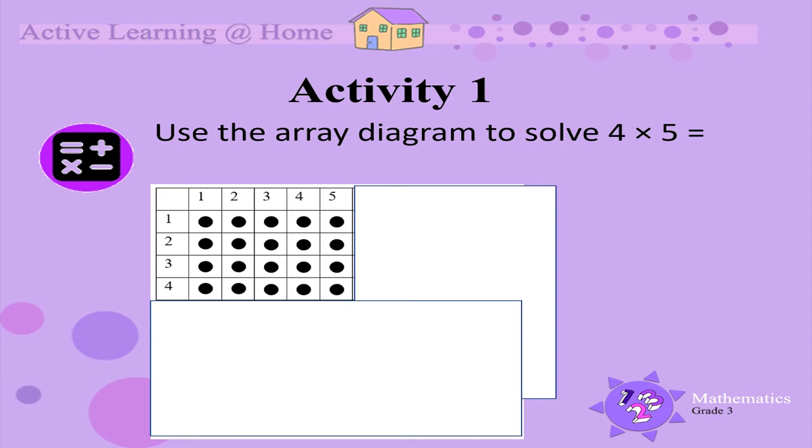You can now count the dots. Are you ready? Count. If you got 20, that is correct. 4 times 5 is 20.